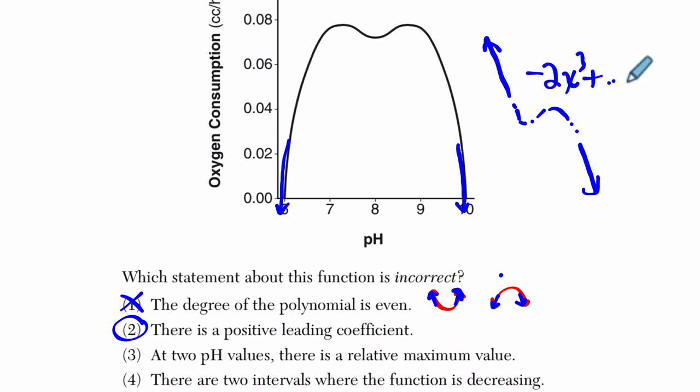If the degree of the polynomial is odd, whether it's three or five or seven, not one, but three, five, or seven and larger, you're going to exhibit behaviors like a cubic function. And the cubic function will be like this if the leading coefficient is negative, and it'll be like I drew before if that leading coefficient is positive.